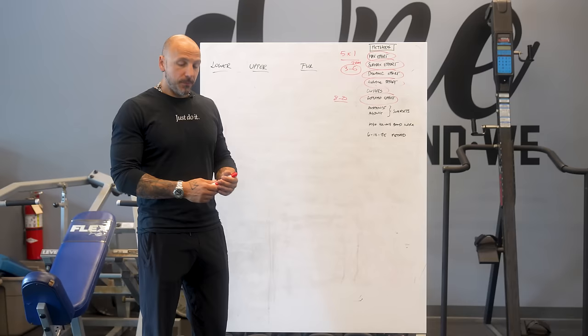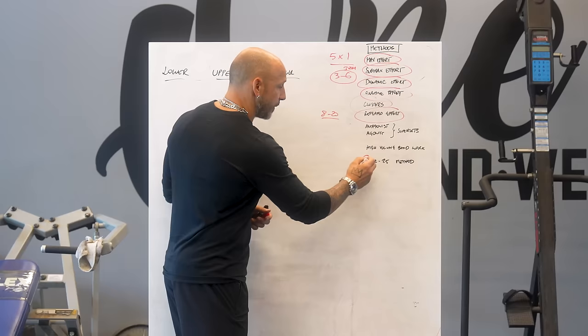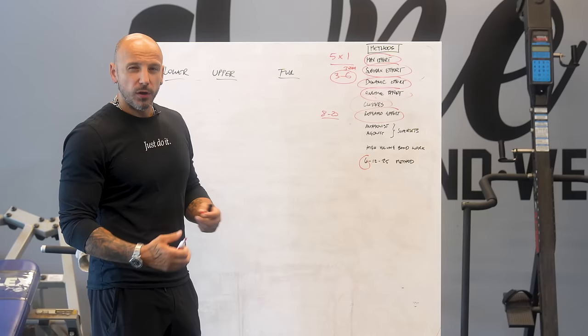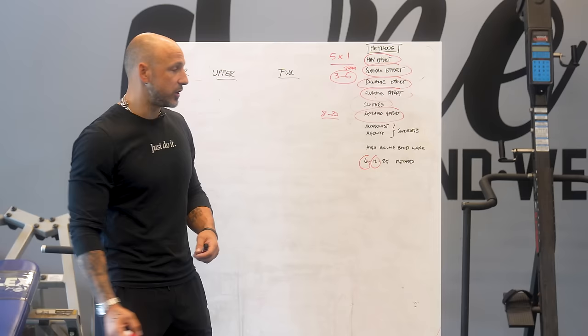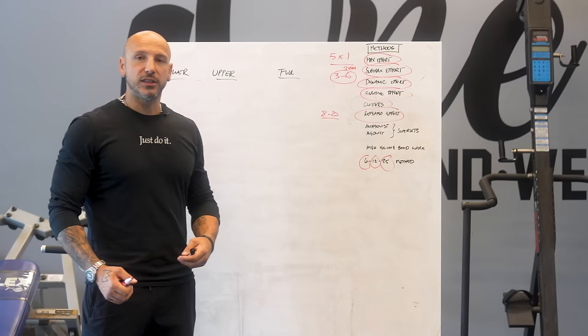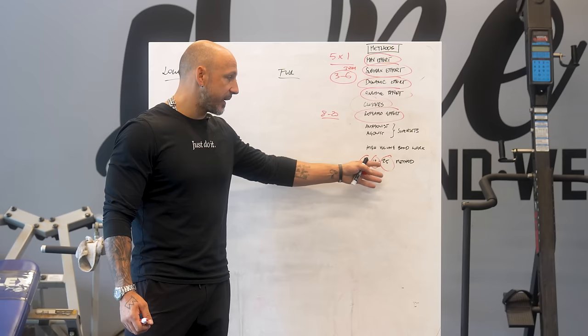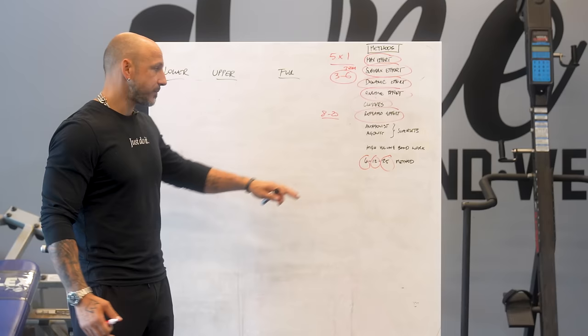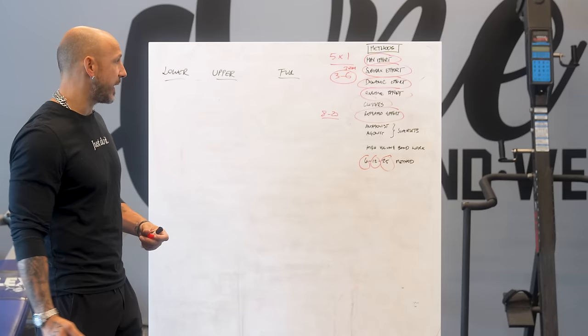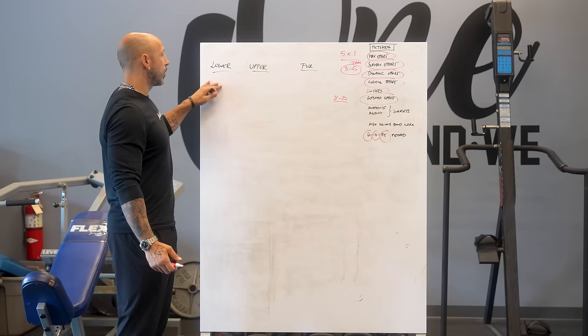The 6-12-25 method is a very stressful muscle-building method. For example: six reps of a front squat with an eight-to-ten rep max load, then 12 reps of a front-foot-elevated split lunge, then 25 reps of leg extensions or sissy squats. You're going from compound to split to isolation — all hitting the same muscle group. It's a lot of stress on that muscle but a very effective hypertrophy strategy.